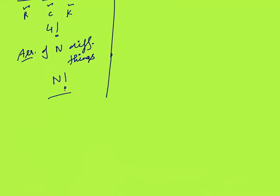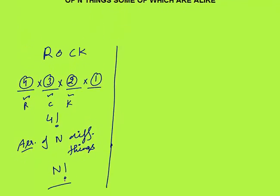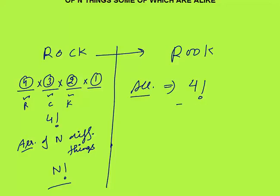Now the topic is arrangements where some letters are alike. I will change the example to R, O, K, R, O, K — wait, let's say R, O, K with a repeated letter. There are 4 letters so total arrangements would be 4 factorial if all were different, but since some letters are the same the answer will not be 4 factorial because some cases will repeat. The answer equals 4 factorial divided by 2 factorial, because O is coming 2 times — you divide by 2 factorial.